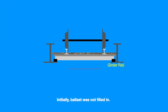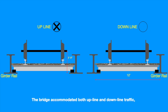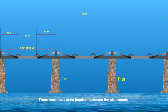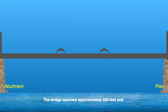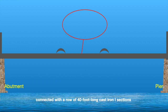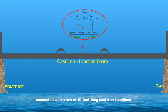Initially, ballast was not filled in. The bridge accommodated both upline and downline traffic, ensuring that no two upcoming trains had to wait to cross it. There were two piers located between the abutments. The bridge spanned approximately 320 feet and connected with a row of 40 foot long cast-iron I-sections.